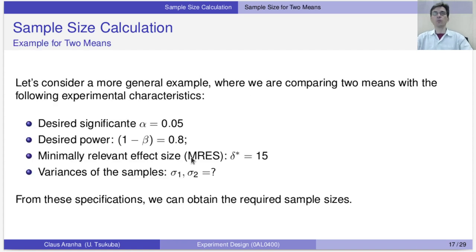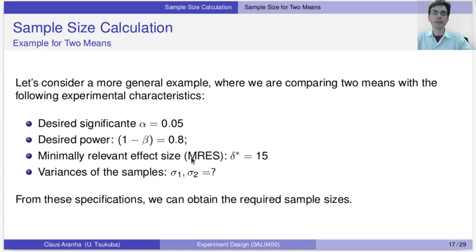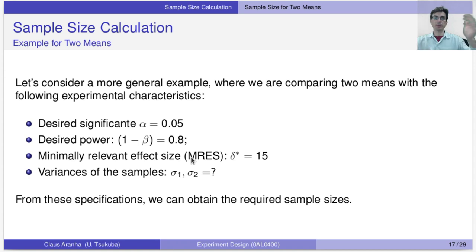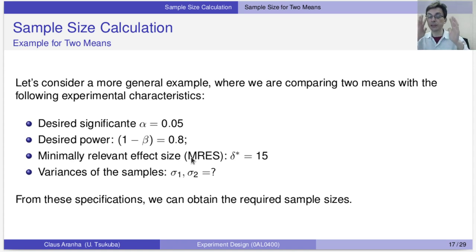That was for one mean. What about for two means? For two means, we usually compare two things — we have two samples and we want to compare the means of those two samples.